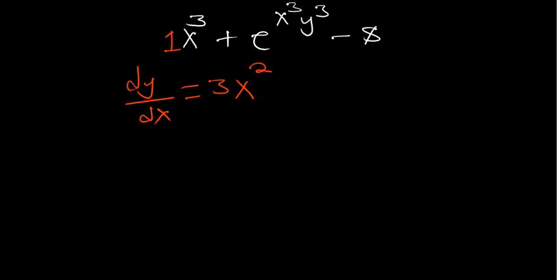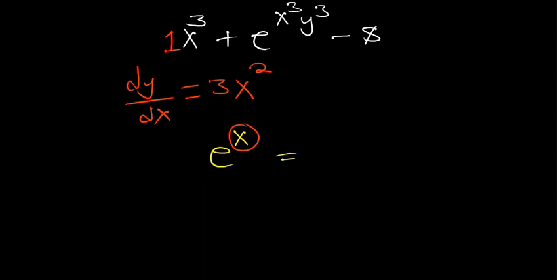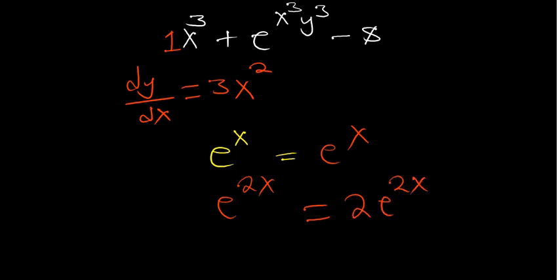A constant becomes zero. For exponential functions, if the power is x, its derivative is multiply the original function by the derivative of the power. Since the derivative of x is 1, the derivative of e^x remains e^x. If we have e^(2x), we multiply by the derivative of 2x which is 2, so the derivative is 2e^(2x). That is how we differentiate exponential functions.